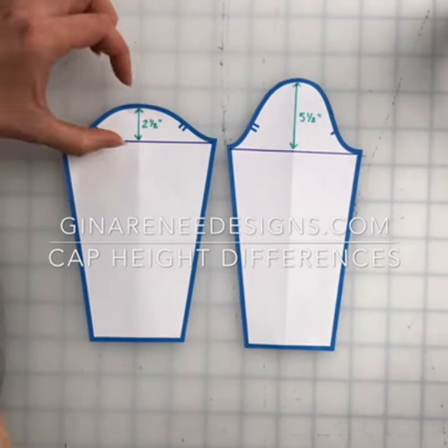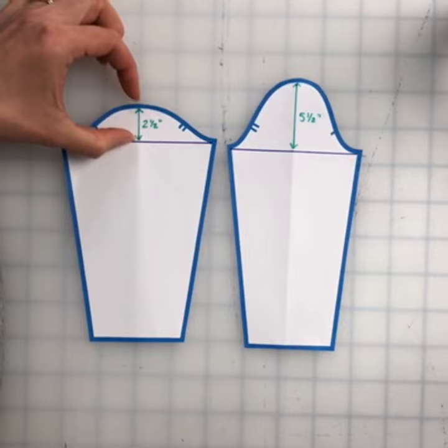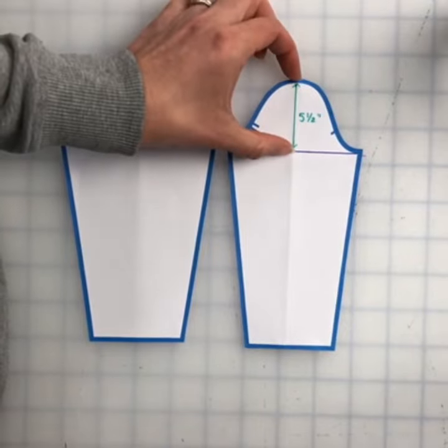These are the differences between cap heights. You can see here we have a very short one versus here a much taller one.